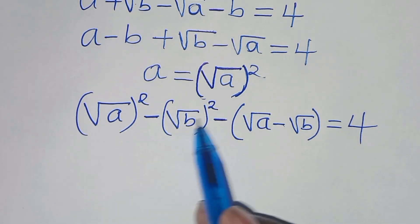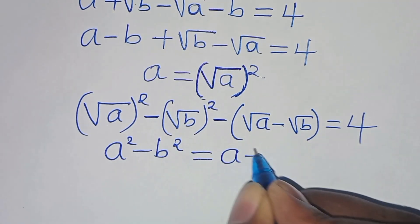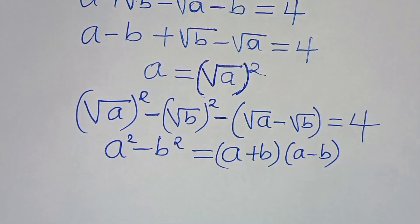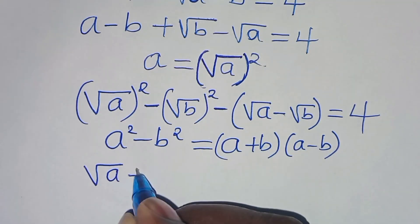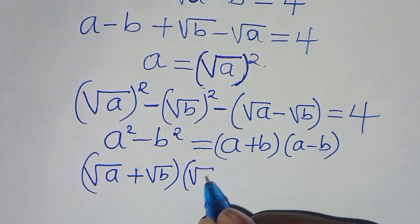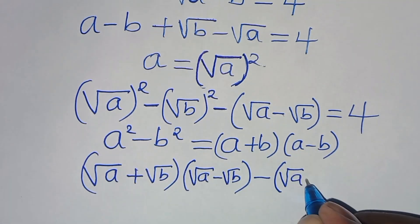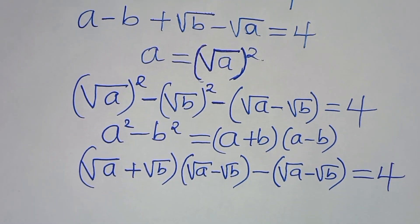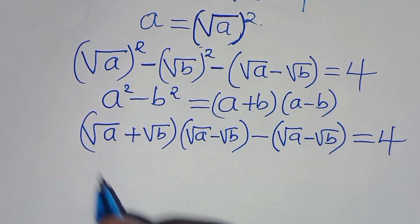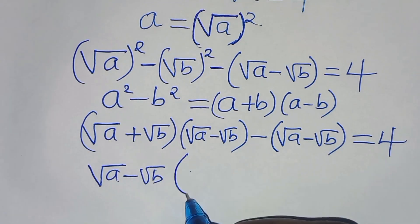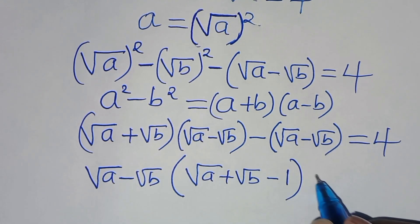We notice that (√a)² minus (√b)² is in the form of x² minus y², which factors as (x + y)(x − y). Applying this identity, we get (√a + √b)(√a − √b), minus (√a − √b), equals 4. Factoring out (√a − √b), we have (√a − √b)(√a + √b − 1) = 4.